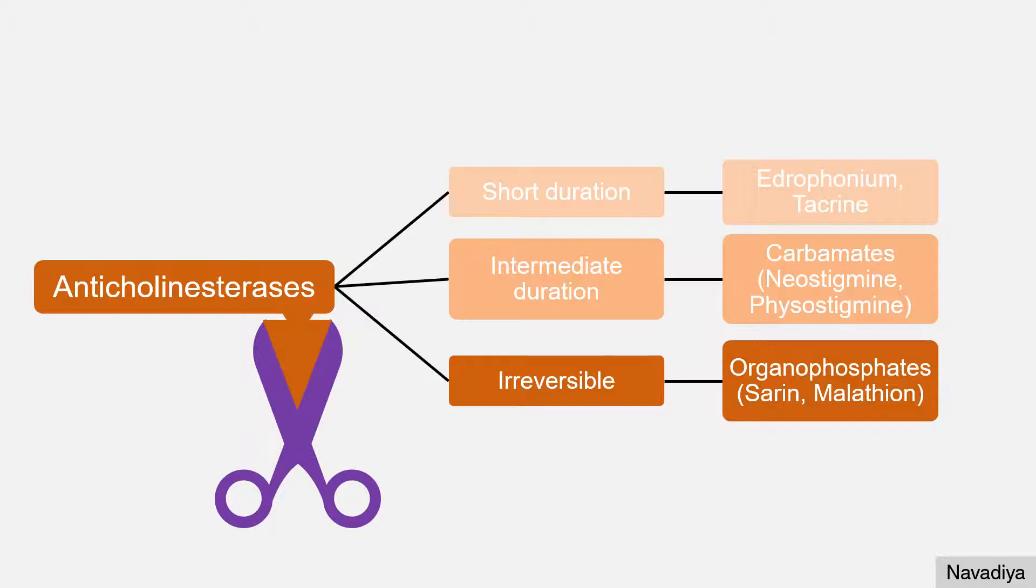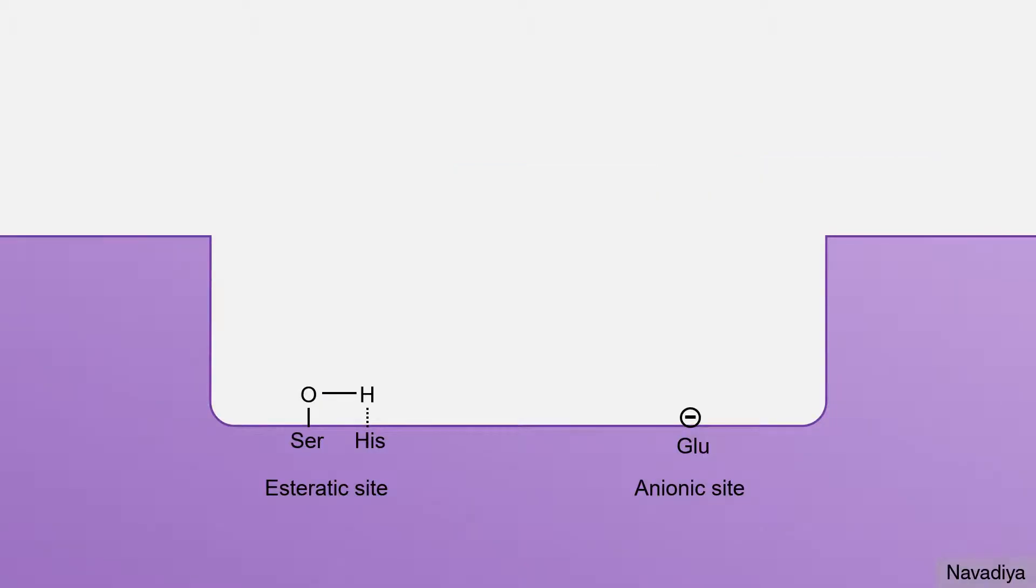Each group acts in different way. Let's start with the first category. So here we have active site of acetylcholinesterase. It has an esteratic site and an anionic site.